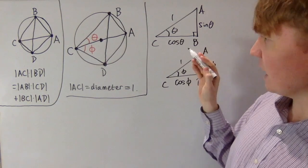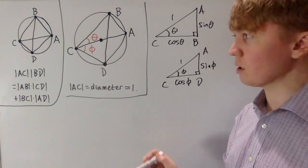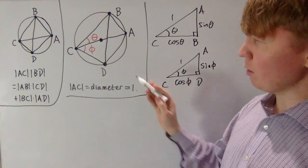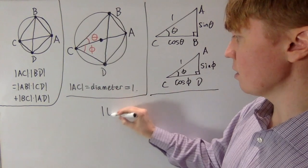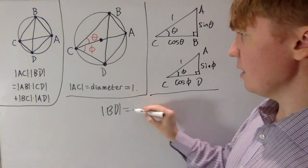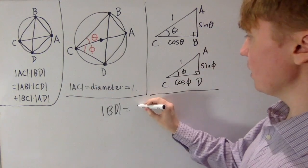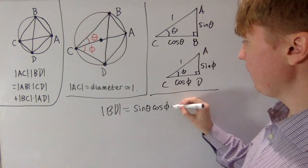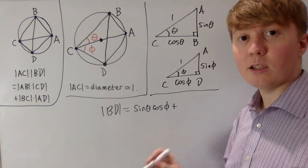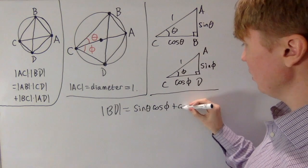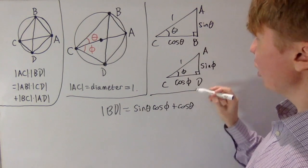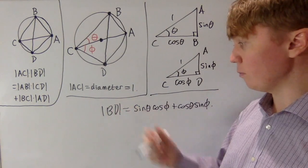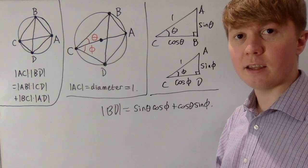Now we can plug all the known lengths into Ptolemy's theorem. AC equals 1, and the length BD we don't know yet, so we leave that as BD. This equals AB times CD, which is sine theta times cos phi, plus BC times AD, which is cos theta times sine phi. All that remains is to show that the length BD is indeed sine of theta plus phi.